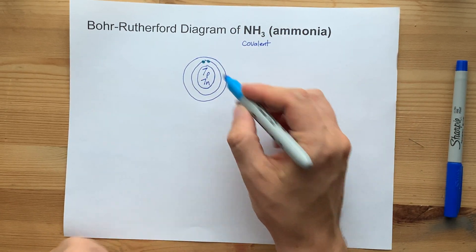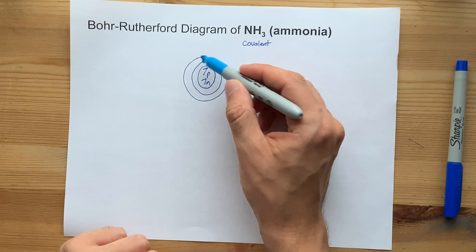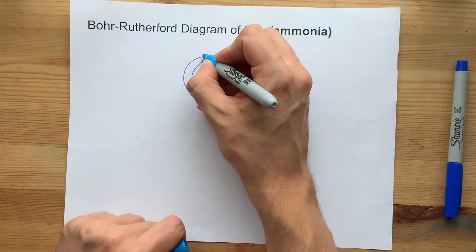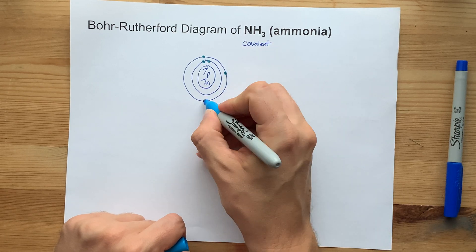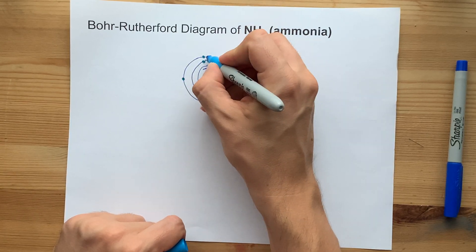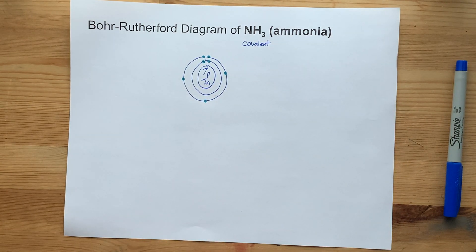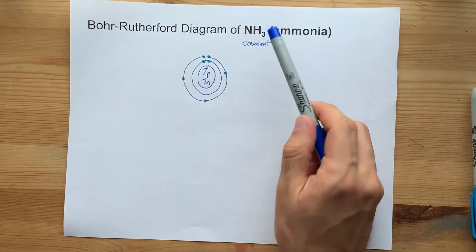Now I'm going to put the extra five in the outer shell. The second shell can hold up to eight, so it's totally fine holding five. One, two, three, four, five. I like to spread them out before I double them up. That's a grade 12 thing.